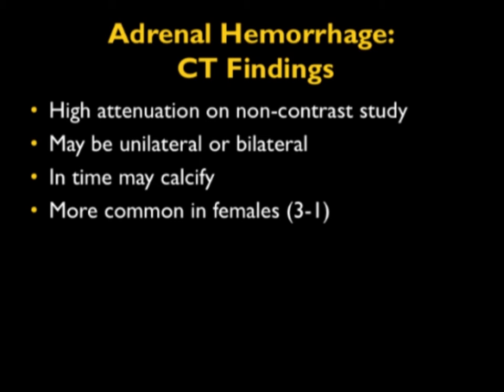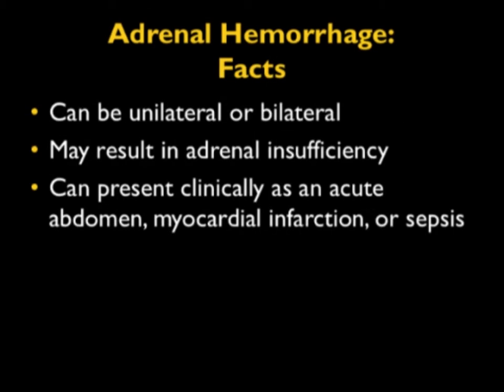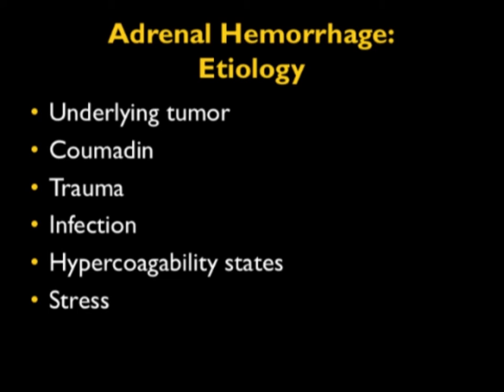Adrenal hemorrhage is more common in females. When it's bilateral, it can result in adrenal insufficiency, and it's often a tough diagnosis because the patient has symptoms of pain, maybe an acute abdomen, myocardial infarction, or even sepsis. Causes of adrenal hemorrhage include underlying tumor, coumadin, history of trauma, infection, hypercoagulability states, and perhaps stress.